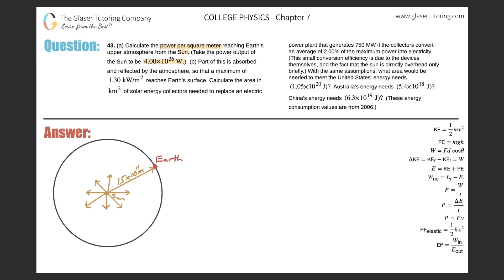The sun is emitting power in all directions, and the Earth, relative to the sun, is located a distance of about 1.5 times 10 to the 11 meters away.